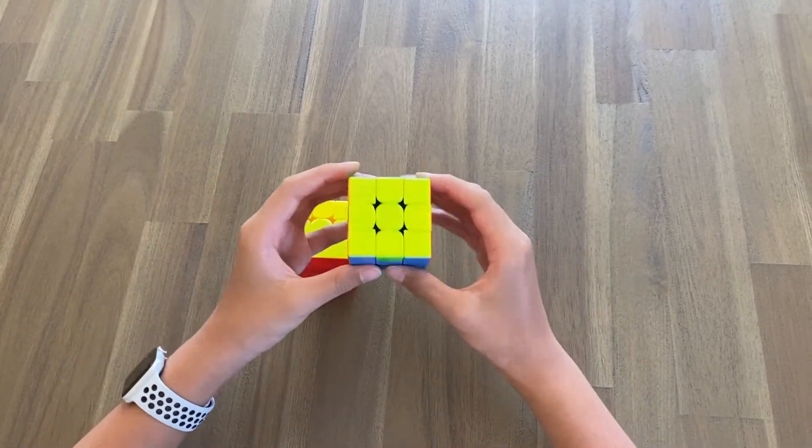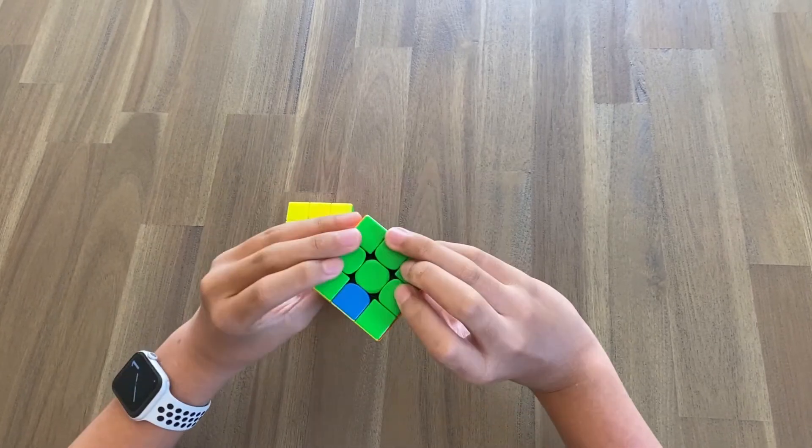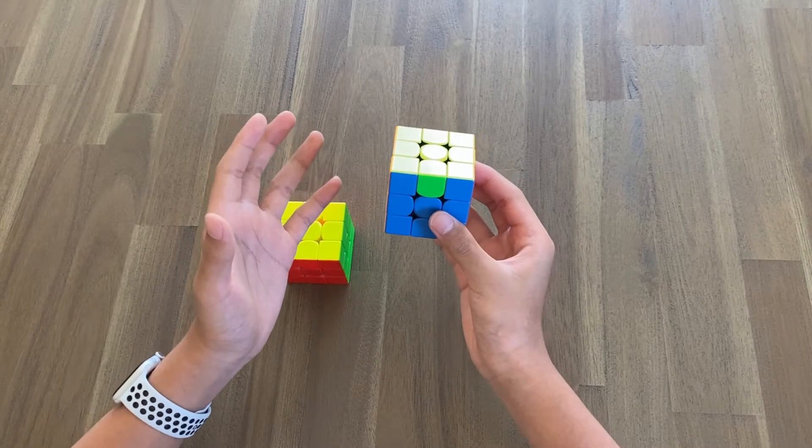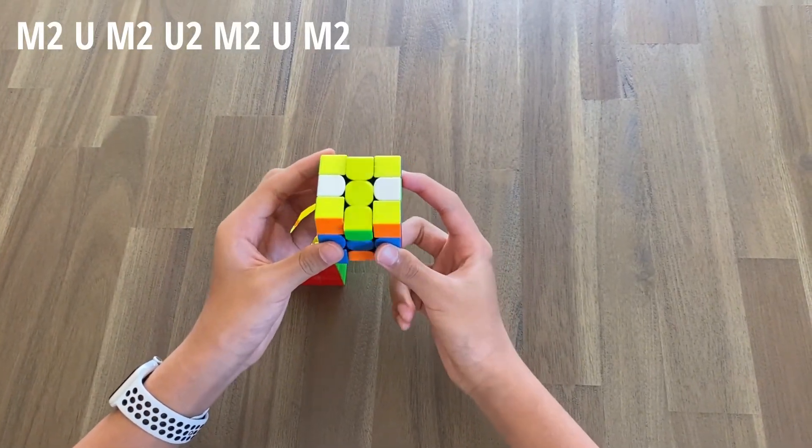And then you also have the H perm. This one's really simple. Make sure as always to use two fingers for M2—I don't know how many times I've said that, but it's really important. And so there you have it.